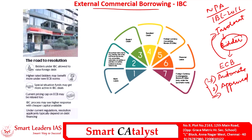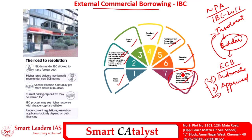ECB can be raised using seven instruments: bank loans; securitized instruments like non-convertible or convertible bonds; buyer's credit; supplier's credit; foreign currency convertible bonds; financial lease; and foreign currency exchangeable bonds. Foreign currency exchangeable bonds can be availed only under the automatic route and are not available under the approved route.